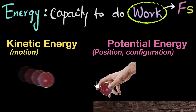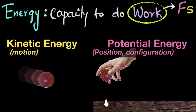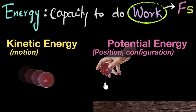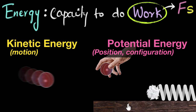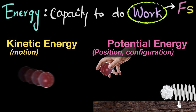For example, gravitational potential energy depends on the height of the object — at small heights it can do less work, so less potential energy; at greater heights, gravity can do more work, so more potential energy. We can also have configuration-based potential energy, like in springs or rubber bands. Compress a spring a little bit and it has less potential energy; compress it more and it has more potential energy.